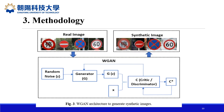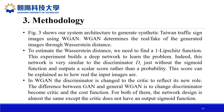This is our methodology. As seen in figure 3, the WGAN architecture generates synthetic images. From the real image input to the WGAN, we output the synthetic image. To estimate the Wasserstein distance, we need to find a 1-Lipschitz function. The experiments build a deep network to learn this. This network is very similar to the discriminator D, but without the sigmoid function, and outputs a scalar score rather than a probability. This score reflects how real the input images are. In WGAN, the discriminator is changed to a critic. The difference between GAN and WGAN is changing the discriminator to a critic and modifying the cost function, while the network design is almost the same except the critic has no output sigmoid function.